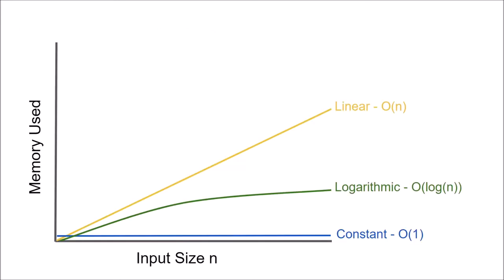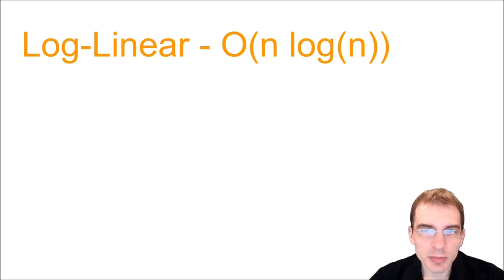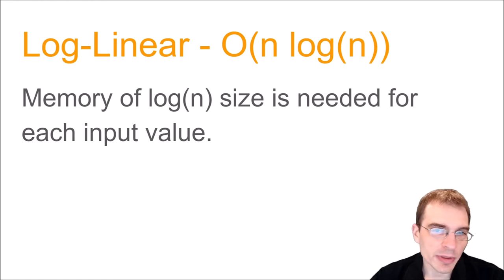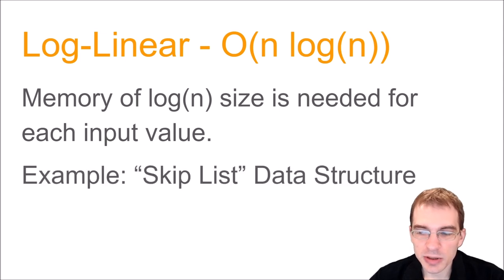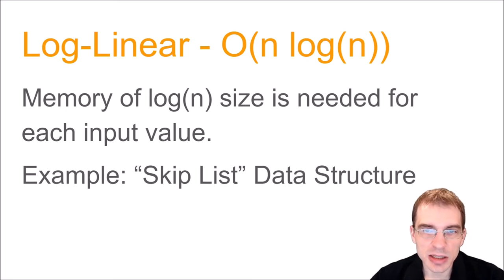After linear space complexity, the next worst class is log linear space complexity. Something with log linear, also called O(n log n) memory complexity, is a function where memory of size log n is needed for each input value. This isn't a very common thing in terms of memory complexity — you do see n log n computational complexity with some regularity, but n log n for space complexity isn't quite so common. There is a data structure called a skip list that actually has a space complexity that's O(n log n), but this probably isn't something you're going to see that often.